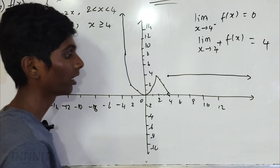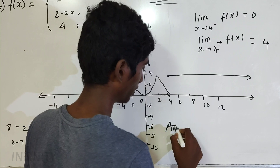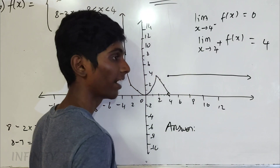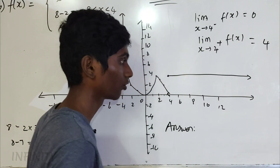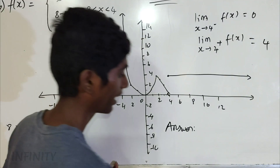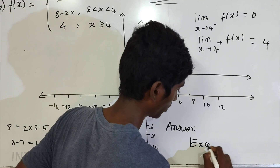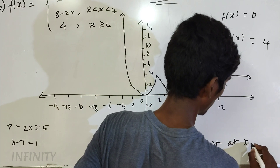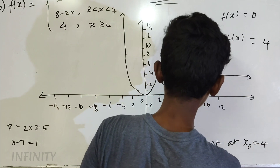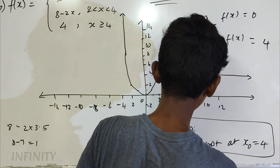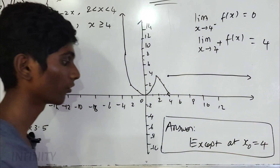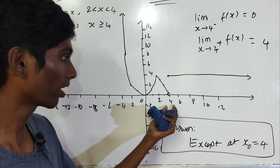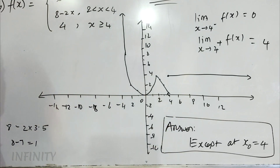So in this function, the correct answer is that the limit exists at all values. The limit exists everywhere except at x0 equal to 4. So x0 equal to 4 is where we check if the limit exists in the function.